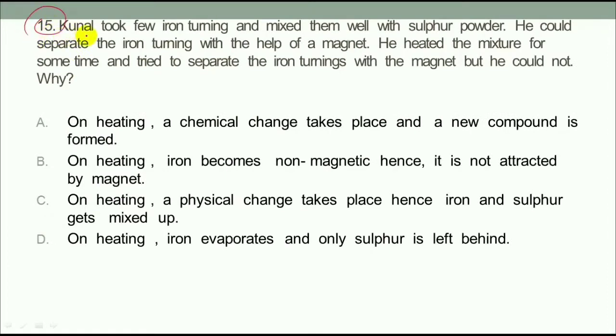This is Question 15. Kunal took few iron turnings and mixed them well with sulfur powder. He could separate the iron turnings with the help of a magnet. He heated the mixture for some time and tried to separate the iron turnings with the magnet, but he could not. Why?